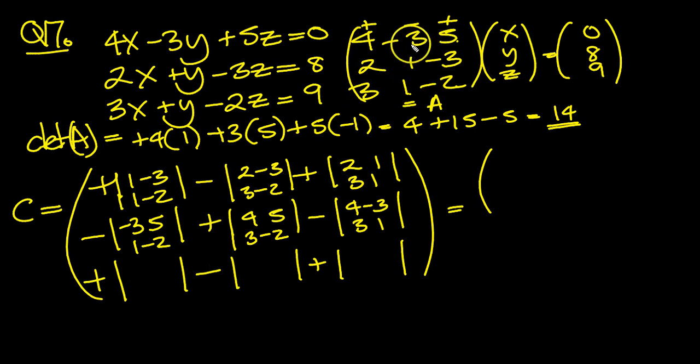And then the bottom left, you're left with these 4: -3, 5, 1, -3. And then this one, you're left with these 4: 4, 5, 2, -3. And then the bottom right, row and column, you're left with these 4: 4, -3, 2, 1.